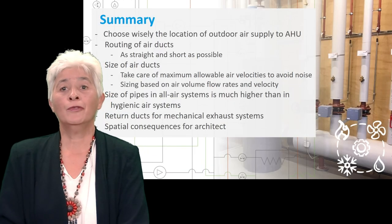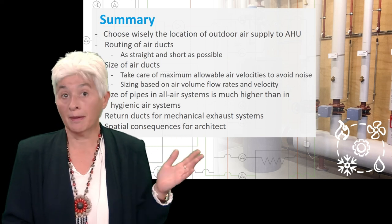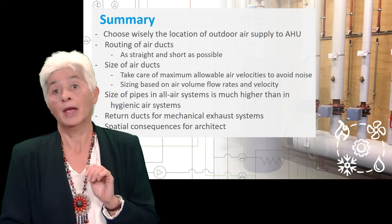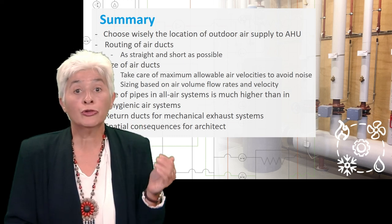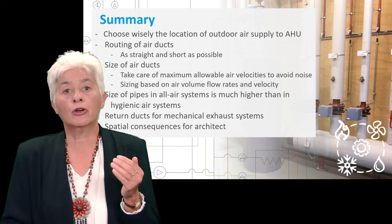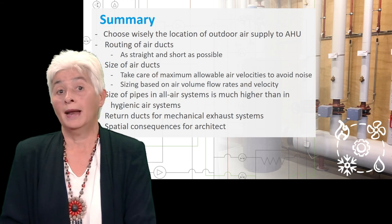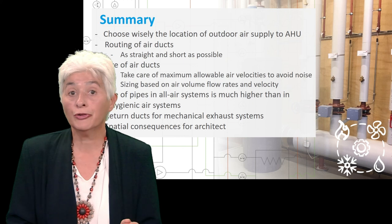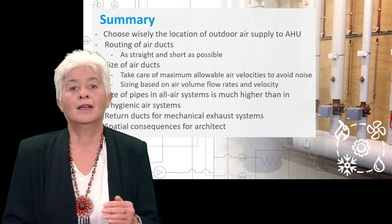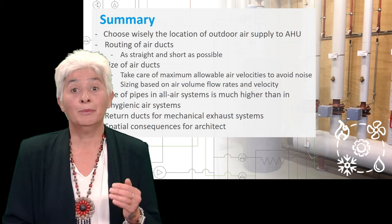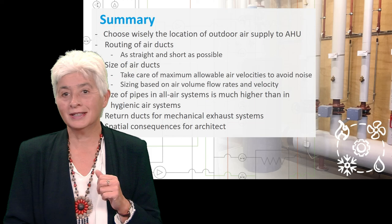In this lecture, you have learned where to place the outdoor air supply to the air handling units. You are also aware that when designing the routing of air pipes, it should be as straight and short as possible. As for the sizing of air ducts, it is of main importance to minimize the air velocity to avoid noise nuisance, and you have learned which formulas to use to size the ducts based on the needed volume flow rates. When all-air systems are applied, higher volume flow rates are needed to transport heat and cold, so generally the pipes are much larger than when only hygienic air is transported. Finally, don't forget the return pipes and be aware of the consequences of your design for the architect. That's something to discuss with her or him. Thank you for listening, goodbye!